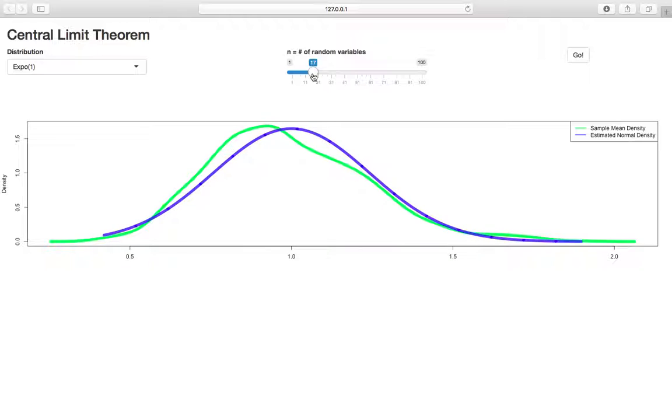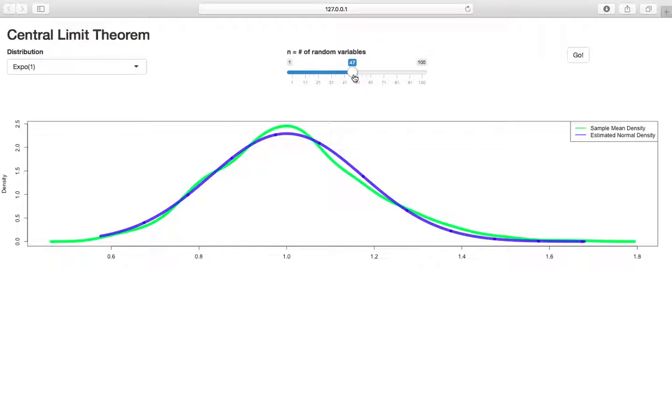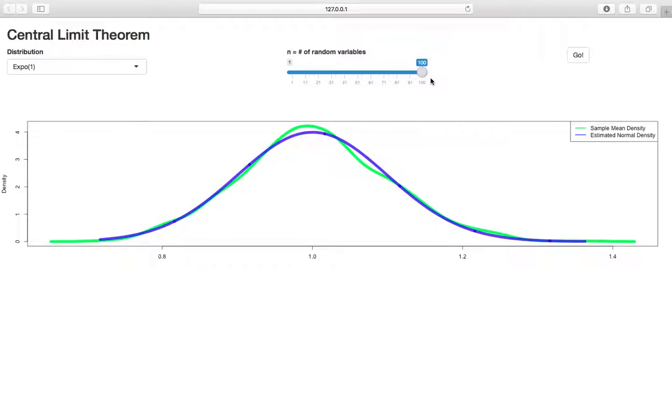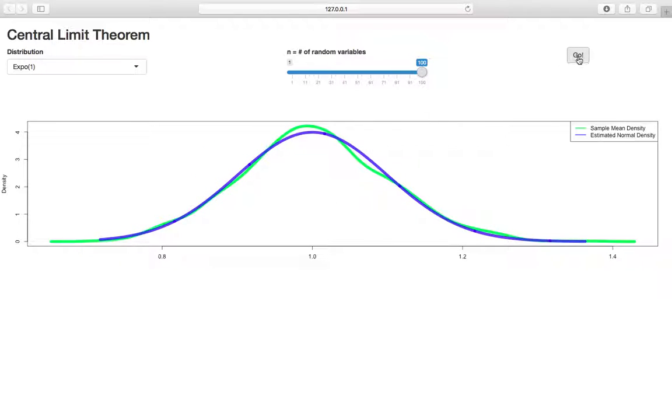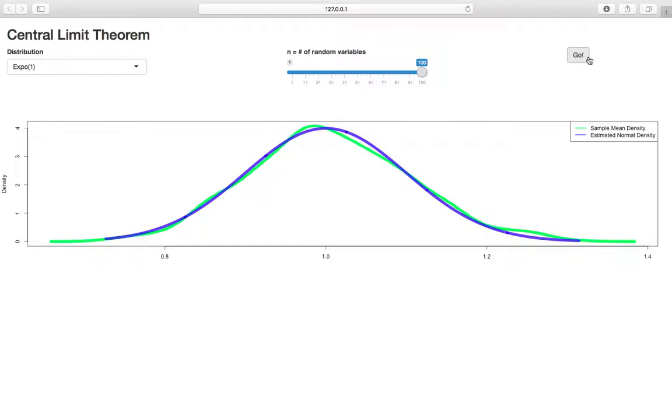If we increase n, it starts to become more and more normal. So we went from 17, now we go to 33, getting more and more normal. Let's just push it all the way to 100. We get something that's pretty normal, and we can keep these parameters and just do a bunch of extra samples by just hitting go. We just see we hit go, and we get things that are generally pretty normal.